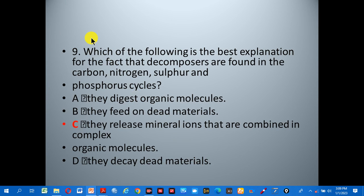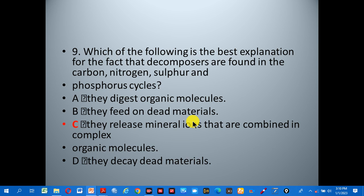Number nine: which of the following is the best explanation for the fact that decomposers are found in the carbon, nitrogen, sulfur, and phosphorus cycles? A: they digest organic molecules. B: they feed on dead material. C: they release mineral ions that are combined in complex organic molecules. D: they decay dead materials. The correct answer is C — they release mineral ions that are combined in complex organic molecules.